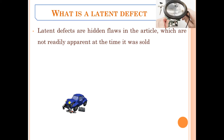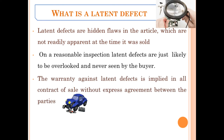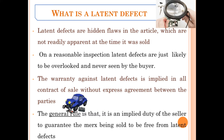A latent defect is a hidden flaw in the article sold which is not readily apparent at the time of sale. On a reasonable inspection, latent defects are usually likely to be overlooked and never seen by the buyer. The warranty against latent defects is implied in all contracts of sale without express agreement between the parties. Thus, the seller is required by law to warrant the buyer that the product is free from latent defects.